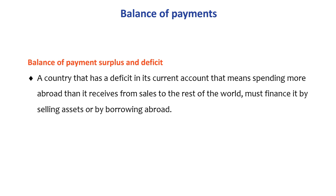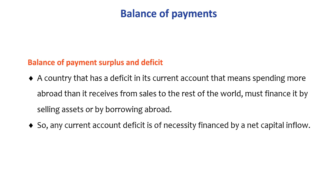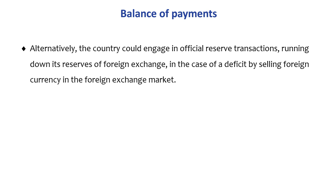Regarding balance of payments surplus and deficit: a country with a deficit in its current account — meaning it is spending more abroad than it receives from sales to the rest of the world — must finance it by selling assets or borrowing abroad. Any current account deficit is of necessity financed by a net capital inflow. Alternatively, the country could engage in official reserve transactions — running down its reserves of foreign exchange by selling foreign currency in the foreign exchange market.